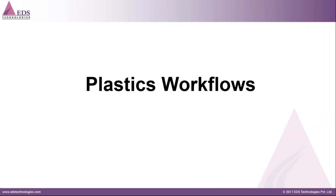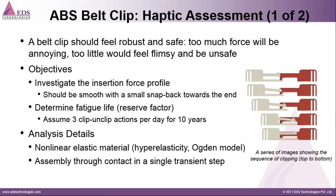Now we'll look at a few plastic workflows. The first is on an ABS belt clip, which is a haptic assessment. ABS — acrylonitrile butadiene styrene — is a common type of thermoplastic polymer. It is mouldable above a specific temperature and solidifies upon cooling. It is used extensively in automotive trim components as well as toys and other household consumer goods.